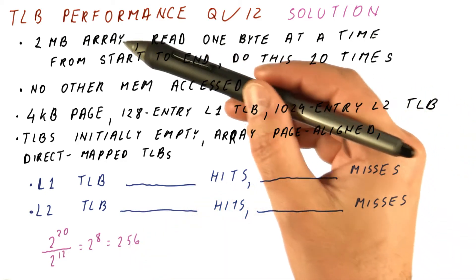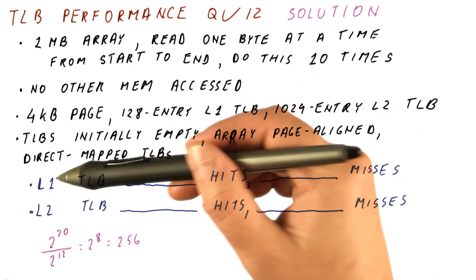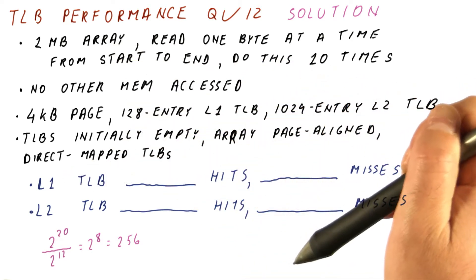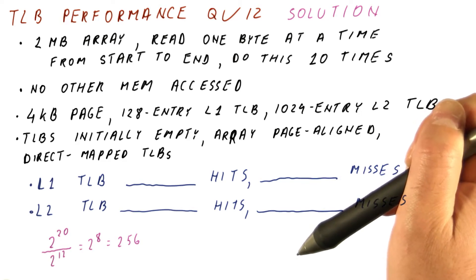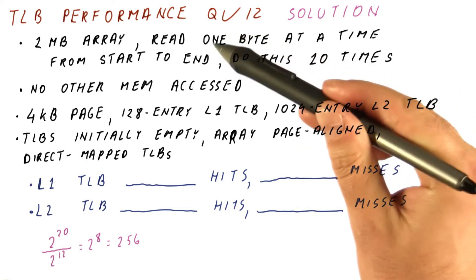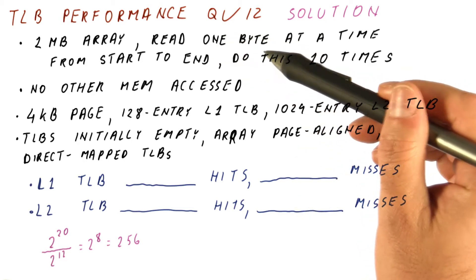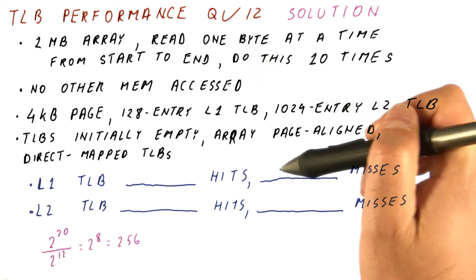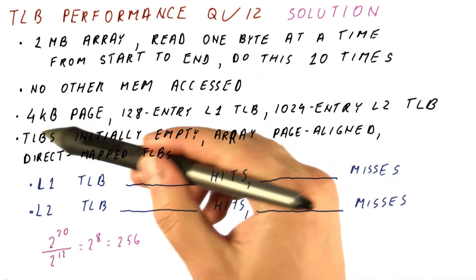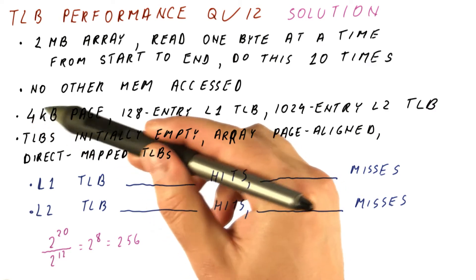Now what happens is, once you have the first access, you will have a level one TLB miss, a level two TLB miss, and the translation will be generated and placed in both TLBs. Next, when we access the second byte, we have a TLB hit, because that byte is in the same page as the previous one. So after the first miss, we will have hits for the remainder of the four kilobyte page.